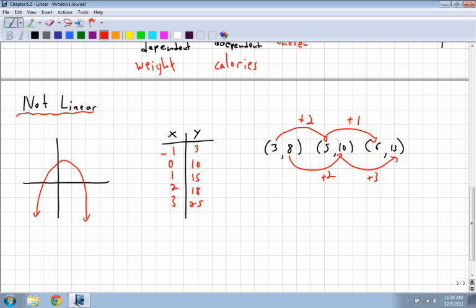So we've looked at what is linear, and we've looked at now what is not linear based on points, table of values, and a graph.